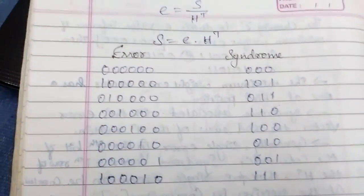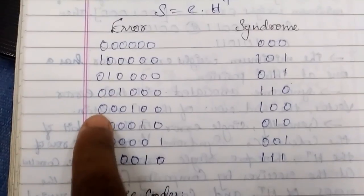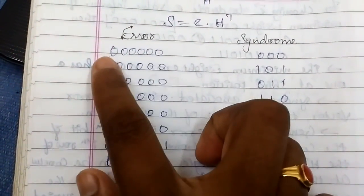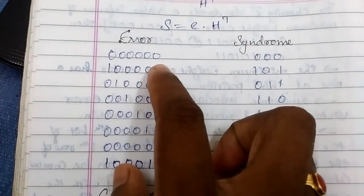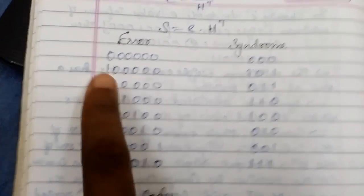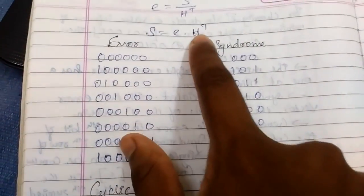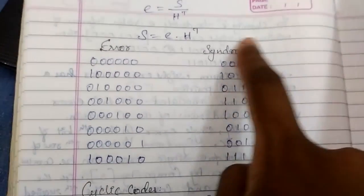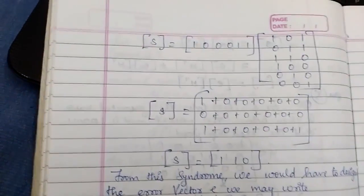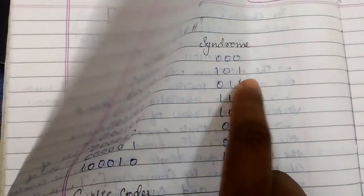To find the error pattern, note that the received word has 6 bits. We form a tabular column starting with the all-zero 6-bit pattern 000000, then shifting a single 1 through all six positions. The syndrome column in this table corresponds to H^T values. We already have syndrome S = 1 1 0, so we check which row in the table matches this syndrome to identify the error pattern.